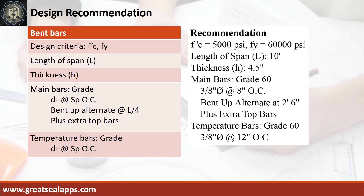Design recommendation as follows: Fc prime equals 5,000 PSI; Fy equals 60,000 PSI; length of span is 10 feet; thickness is 4.5 inches. Main bars of grade 60, 3/8-inch diameter bar at 8 inches on center, bent up alternate at 2 feet 6 inches plus extra top bars. Temperature bars of grade 60, 3/8-inch diameter bar at 12 inches on center.